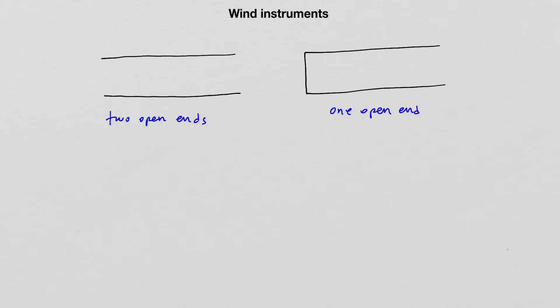Wind instruments are based on the principle of passing air through a cavity. Based on how the sound waves are formed when air passes through a cavity, we have two types of wind instruments.